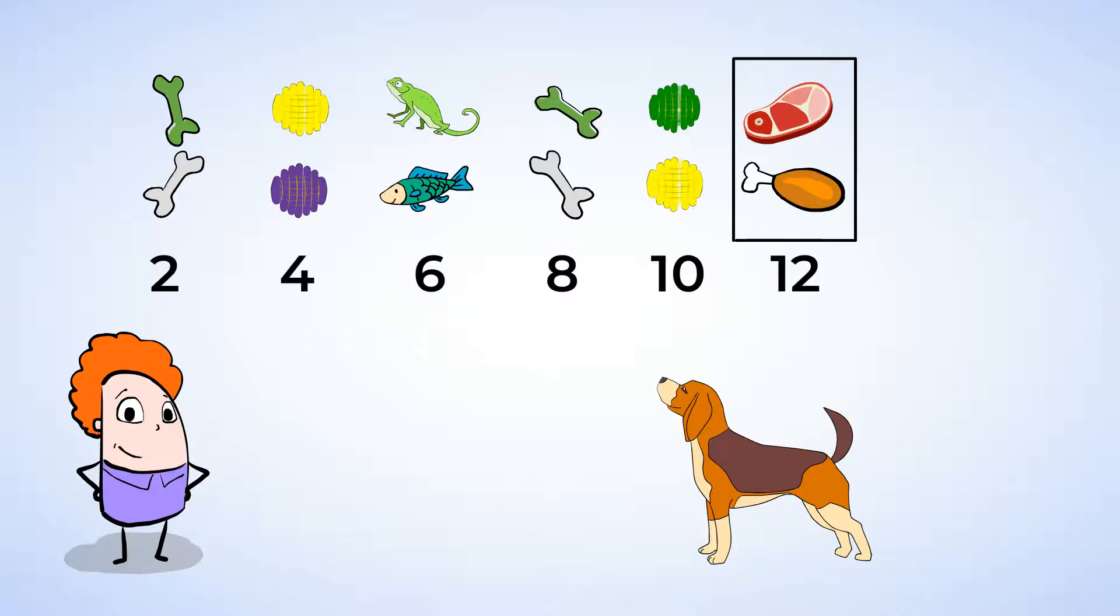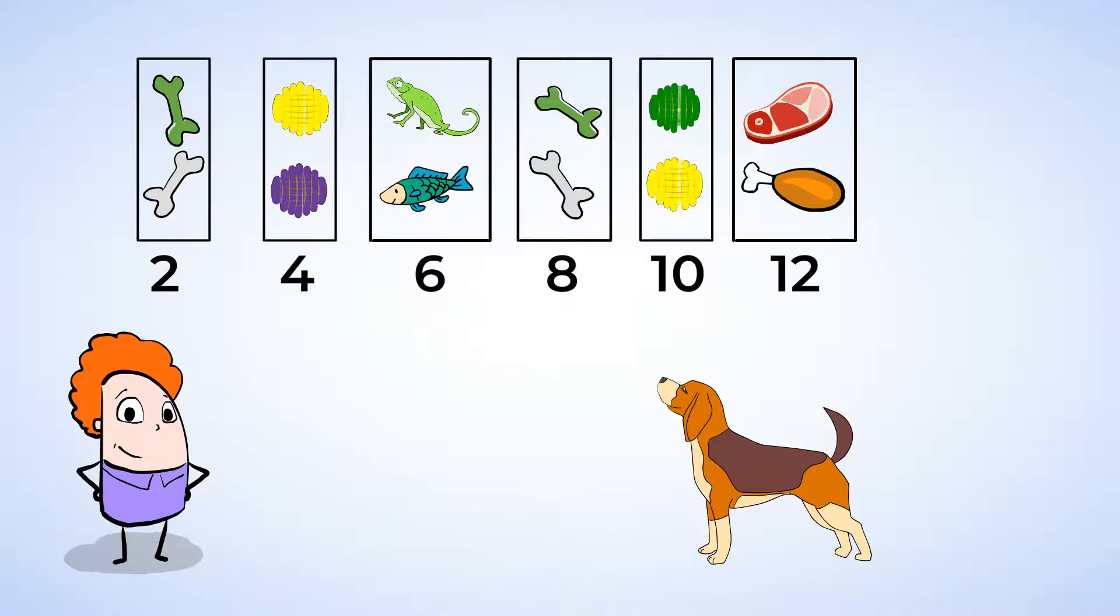Ooh, there are twelve dog toys. Now, we were able to count by twos to find the total number of dog toys. So, twelve is an even number. Great job!